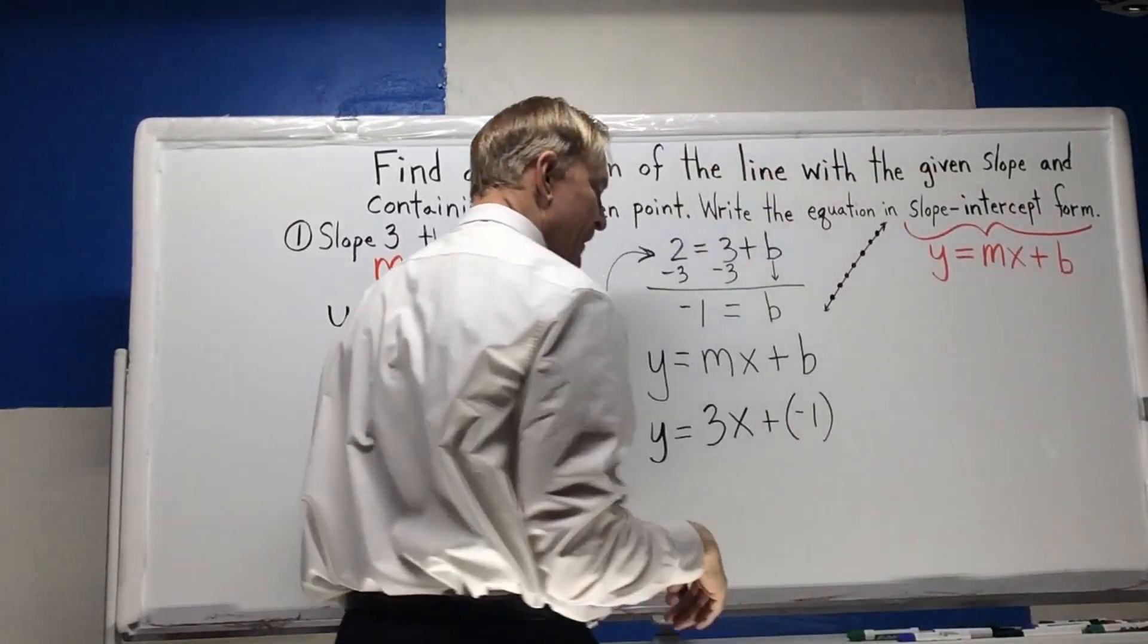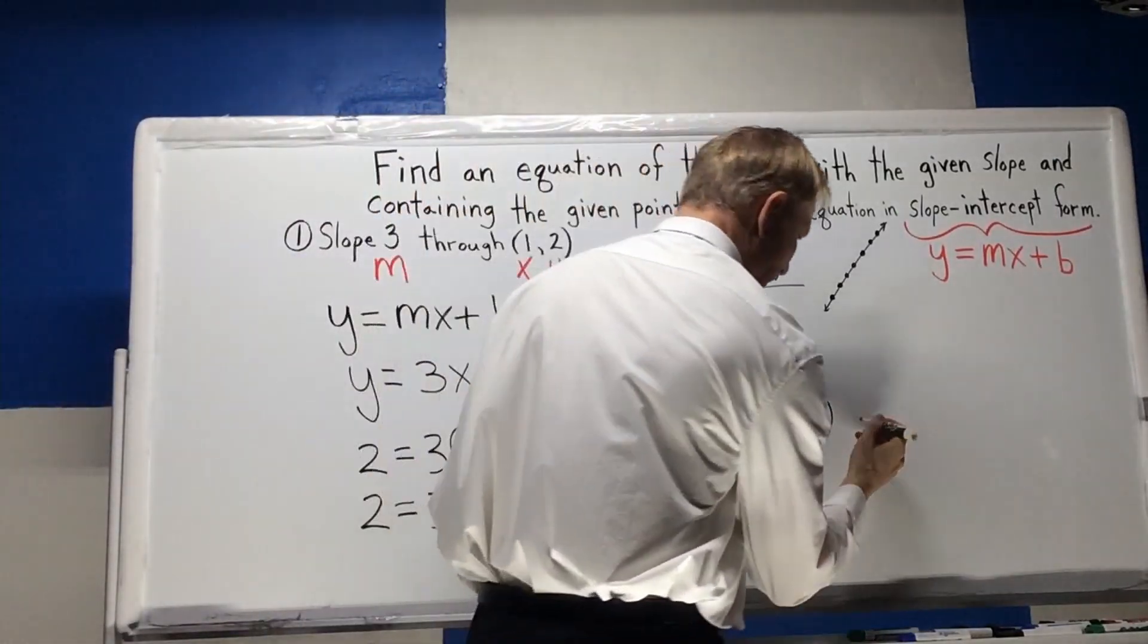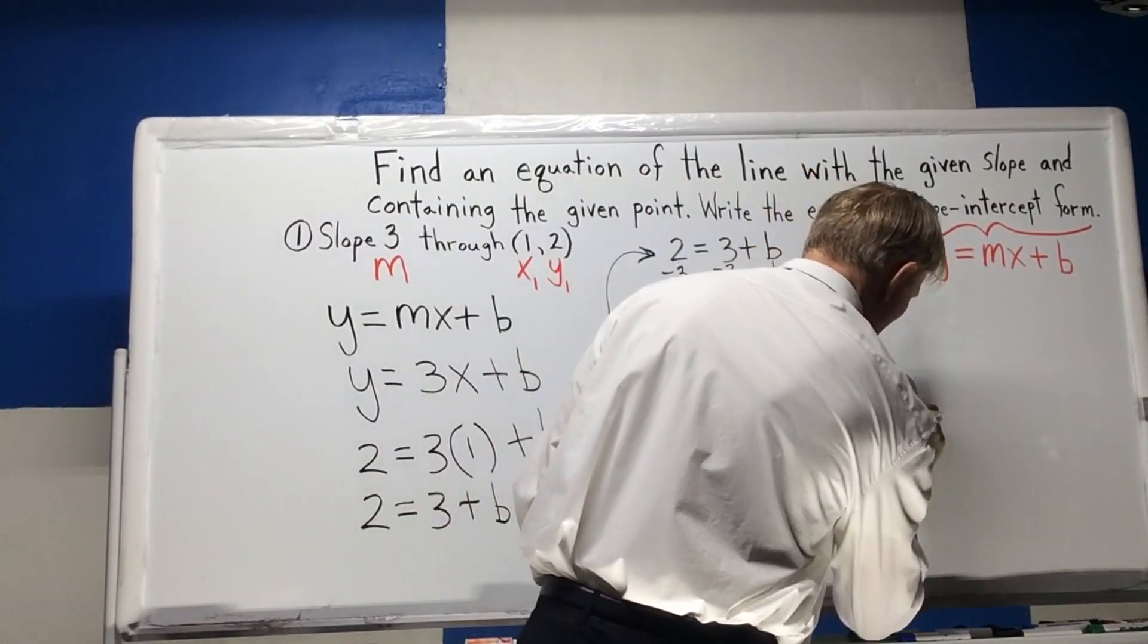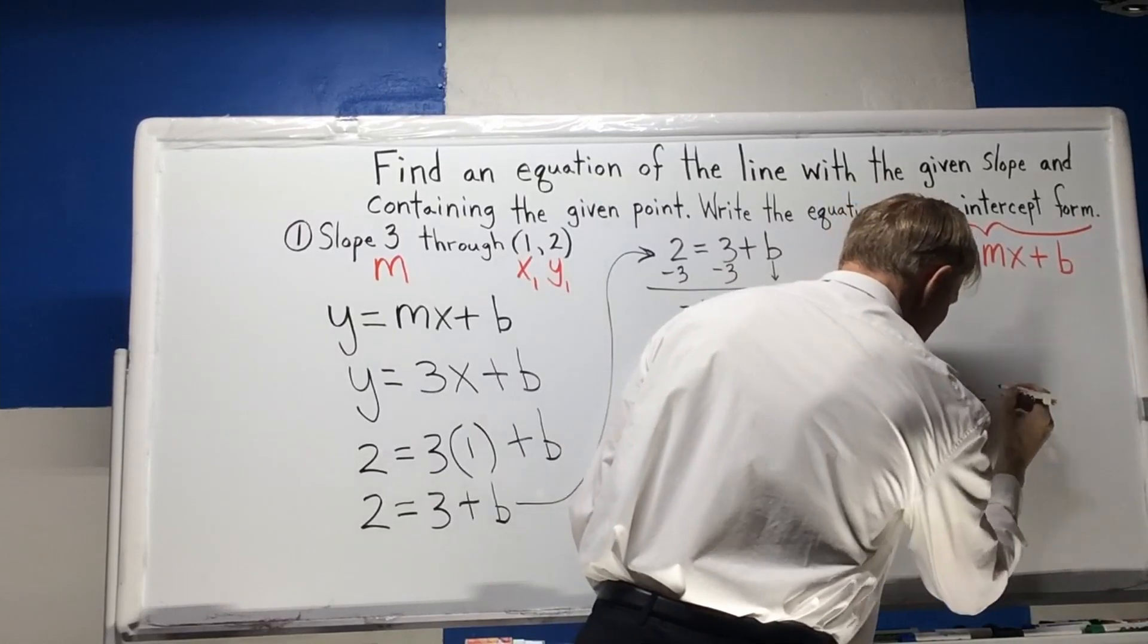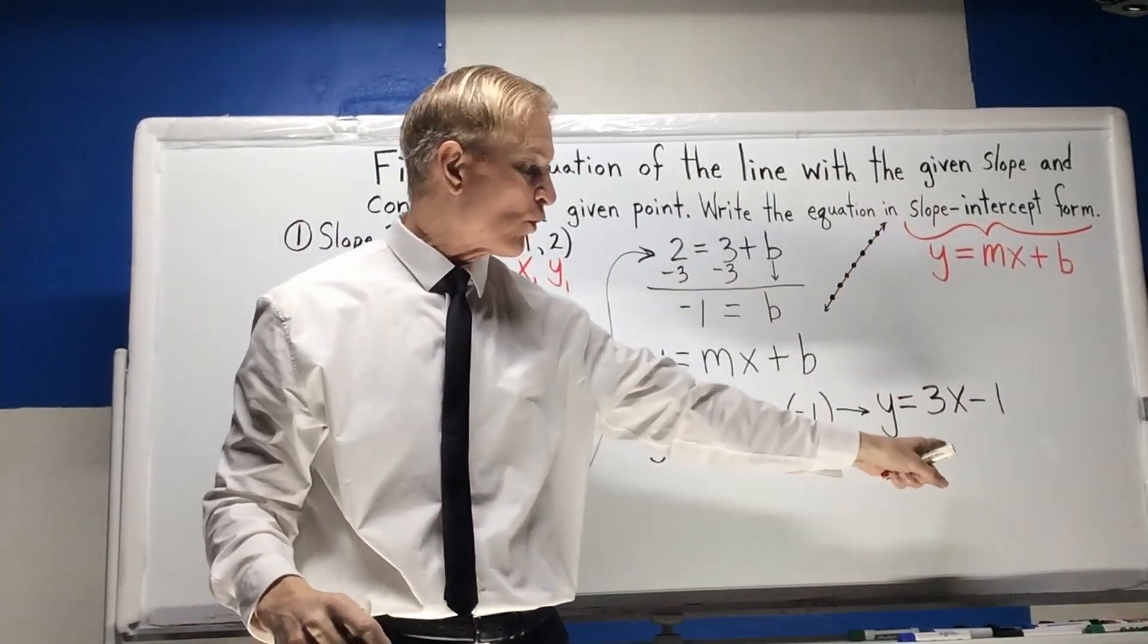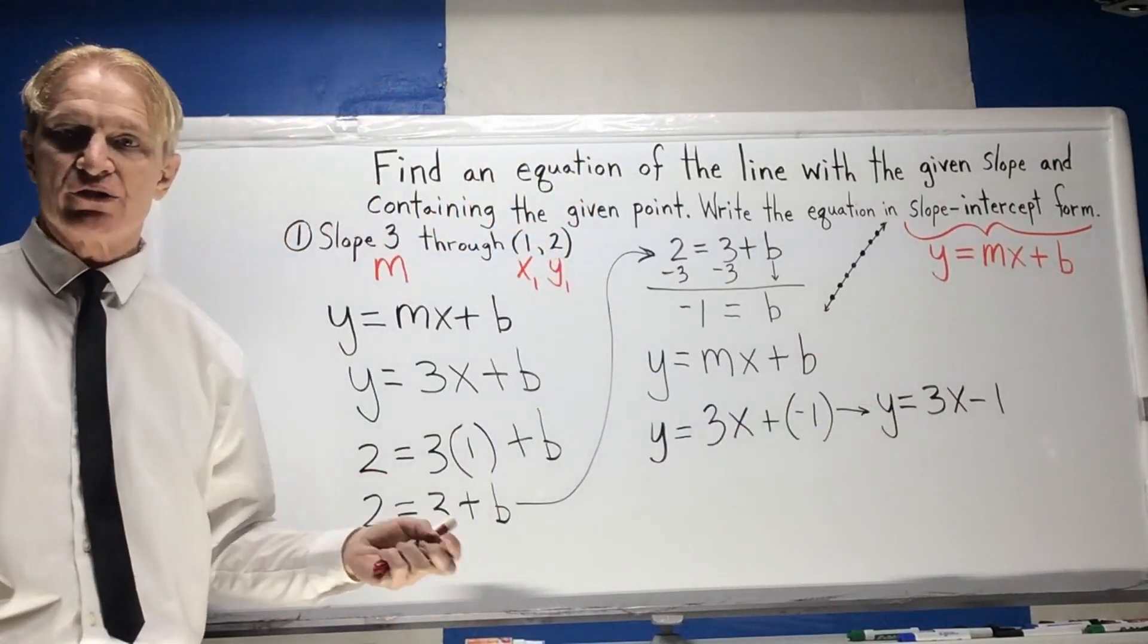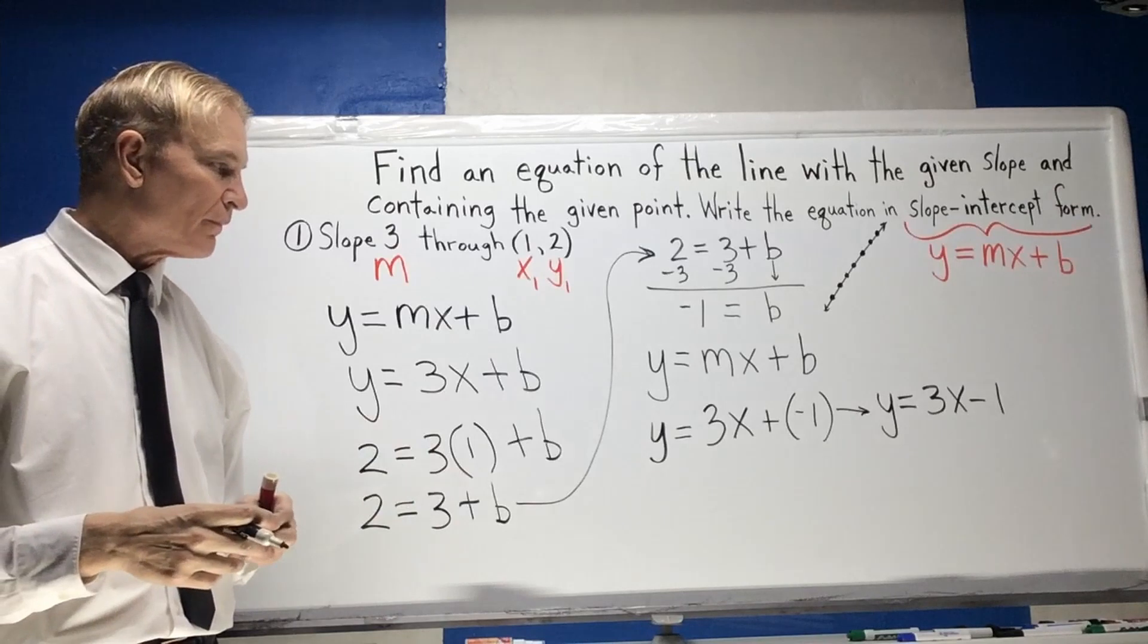But a better way to write it is going to be y equals 3x minus 1. So we'll write it that way. Let's shoot it over here. And that's our final answer. It's in slope intercept form. And it looks like a function, which is nice. You could do a t-chart and graph that.